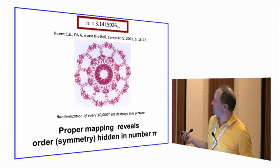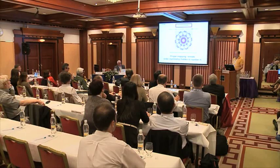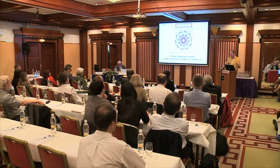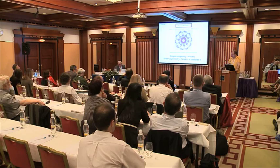If you map binary expansion of pi using a complicated map, you see repeating patterns. If you change every ten-thousandth bit in this binary expansion randomly, the whole picture goes away, and you get just a blurry image. So that means there is an order in the expansion of pi, and there is a symmetry or order of harmony that can be revealed by proper mapping.